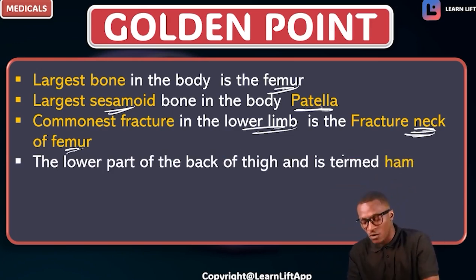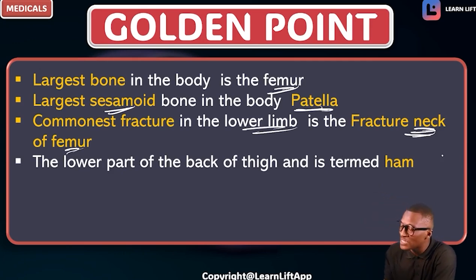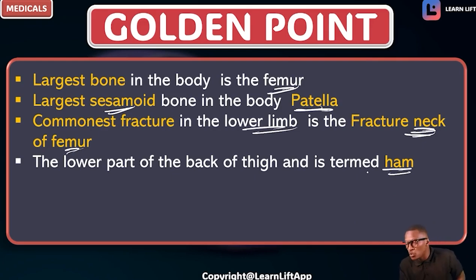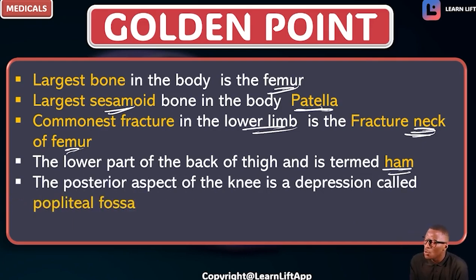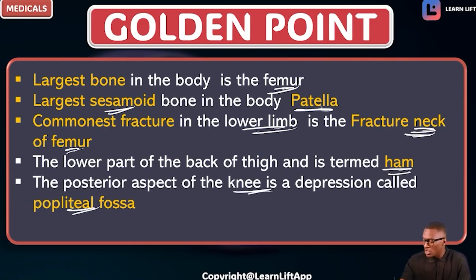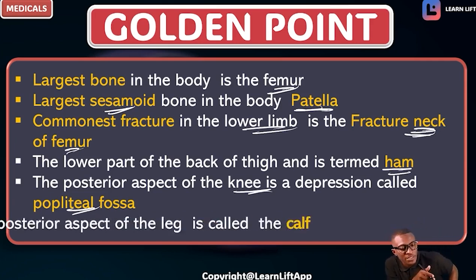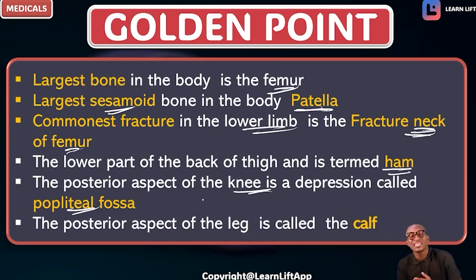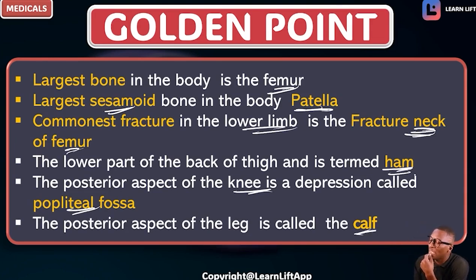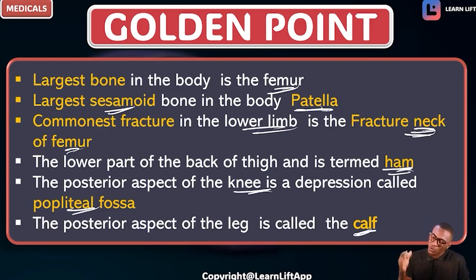The back of the thigh is called the ham or hamstring. The depression found at the posterior aspect of the knee joint is called the popliteal fossa — for the upper limb it is called the cubital fossa, but for the lower limb it is the popliteal fossa. The posterior aspect of the leg is called the calf, while for the thigh we call it the ham.